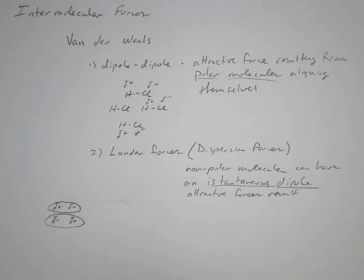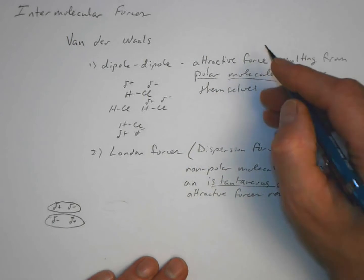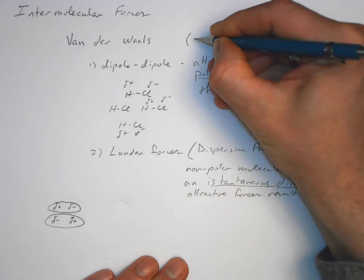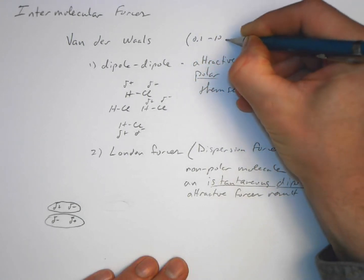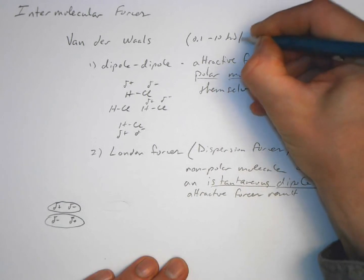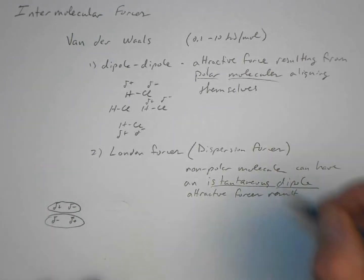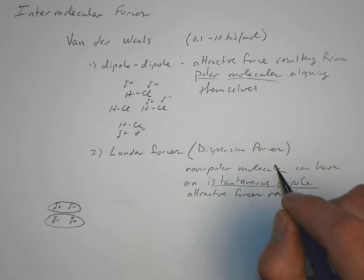We have varying positions of electrons as they move about the nucleus. These van der Waals forces have approximate energies on the order of 0.1 to 10 kilojoules per mole. By comparison, chemical bonds have energies on the order of 100 to 1,000 kilojoules per mole, so van der Waals forces are roughly 100 times weaker than a typical chemical bond.